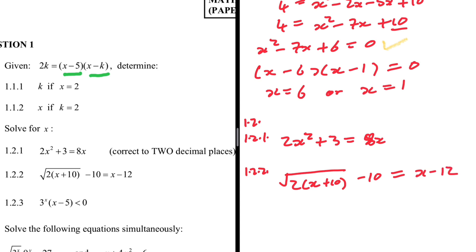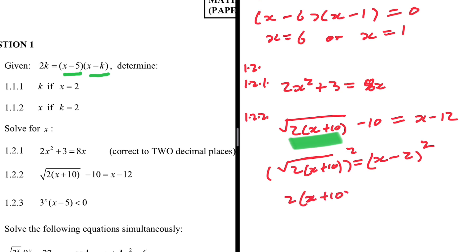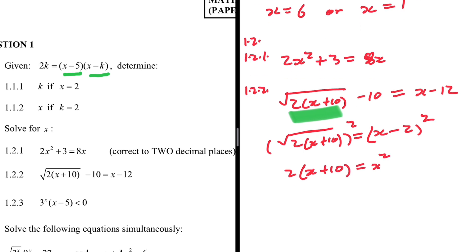We isolate the square root by taking -10 to the right-hand side: √(2(x + 10)) = x - 12 + 10 = x - 2. Then we square both sides. On the left we get 2(x + 10), and on the right we get (x - 2)² = x² - 4x + 4.